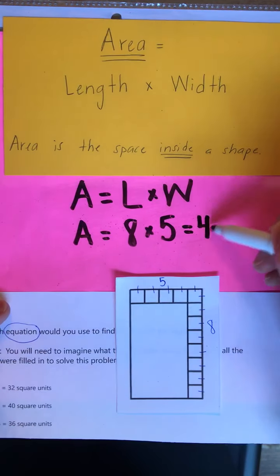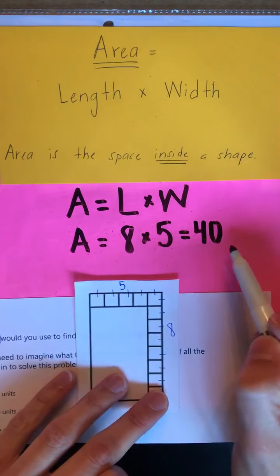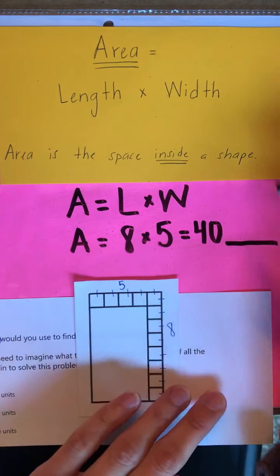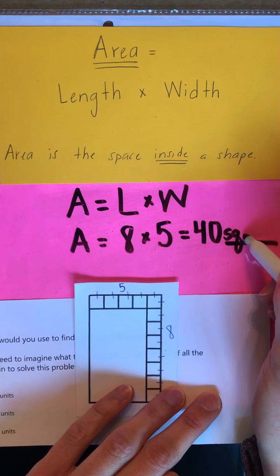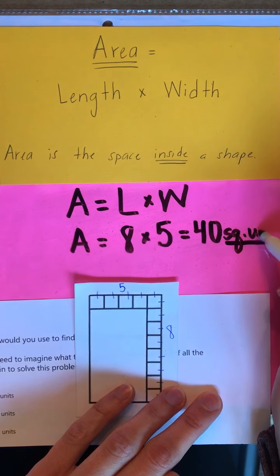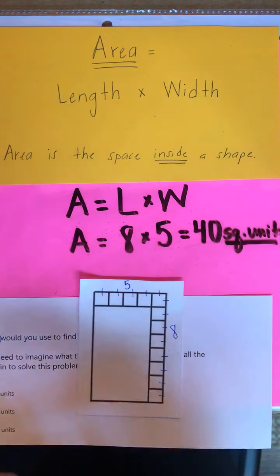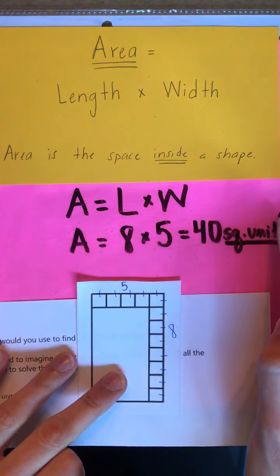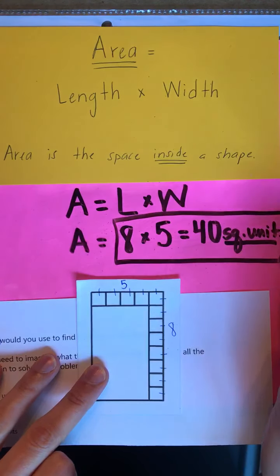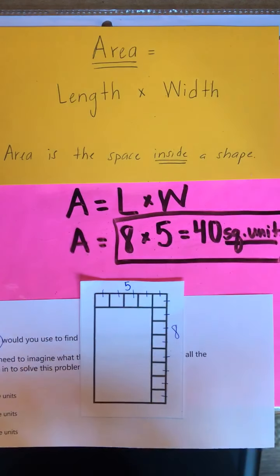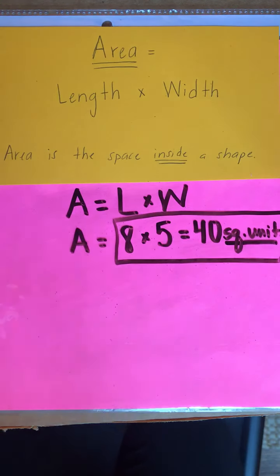So the area of this figure is 40, but we can't forget our label. Our label is square units — you can just write SQ for square. So 40 square units. When you go to find your answer on your quiz, this is your equation. Great job! Let's take a look at number 3 together.